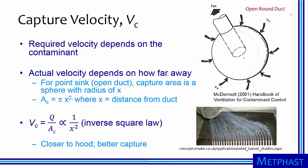The required capture velocity to attain good effectiveness with a capturing hood depends on the contaminant. Dusts require higher velocities than fumes and gases. The actual capture velocity at the source depends on how far away the hood is. For an open round duct, we can model capture efficiency as a sphere with a radius x, where x is the distance from the duct.